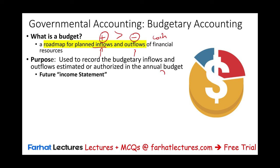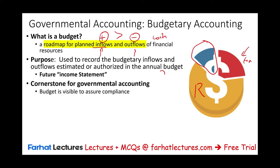Budget is the cornerstone for governmental accounting. Budget is a form of compliance — how do you hold the government accountable? Through a budget. They tell you how they are going to raise money — this is revenue. Then they will tell you what are the expenses or expenditures, and the difference is basically the increase in the fund balance. They have to tell you this up front; it has to be visible so you can hold them accountable. If they promise something, put it in a budget and let's see what happens.